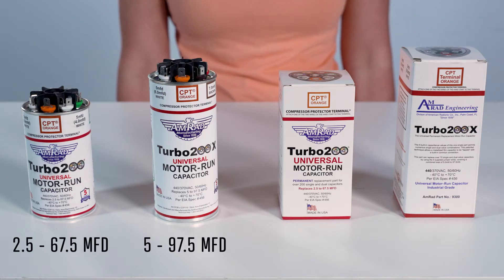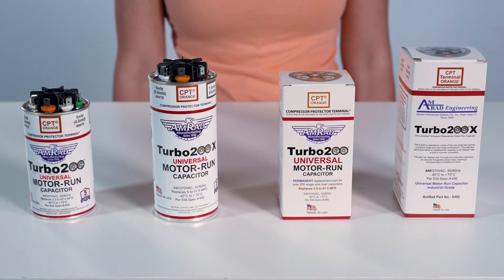The Turbo 200 can cover single and dual values from 2.5 to 67.5 MFD in both 370 and 440 volt. Today we're going to replace the 35 by 5 capacitor for this install.